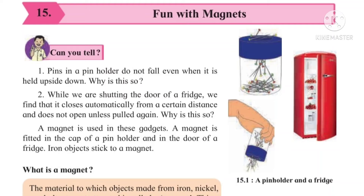Have you thought about what is the reason behind that? If we observe carefully, there is one scientific reason behind it. That is what we have to see in this lesson. In these objects, they have a magnet — in these gadgets or instruments, the magnet is used.